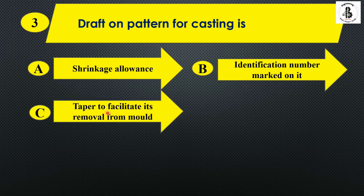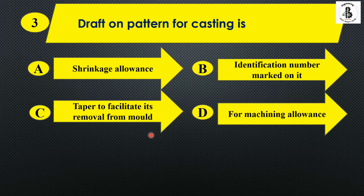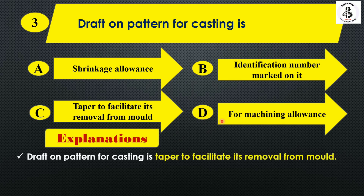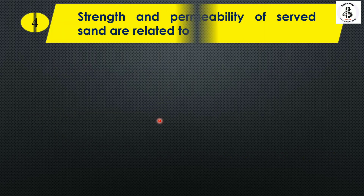The next question: draft on a pattern for casting is — option A: shrinkage allowance; option B: identification number mark on it; option C: taper to facilitate its removal from mold; option D: machining allowances. The draft allowance on patterns in castings provides taper to facilitate removal from the sand mold, so the right answer is option C.